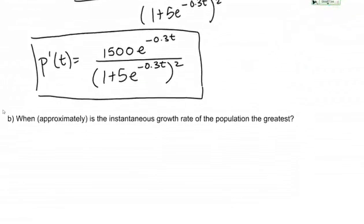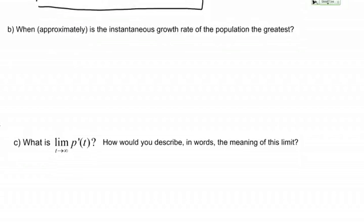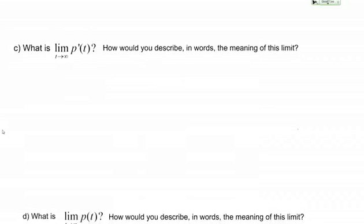What does part B ask? When approximately is the instantaneous growth rate of the population the greatest? Actually, let's do part C first because I'm going to show you a graph to answer part B, but I don't want to give away the answer to part C. Let's go ahead and do part C and then we'll come back to B. Part C asks, what is the limit as T goes to infinity of P prime of T? Then how would you describe in words the meaning of this limit?